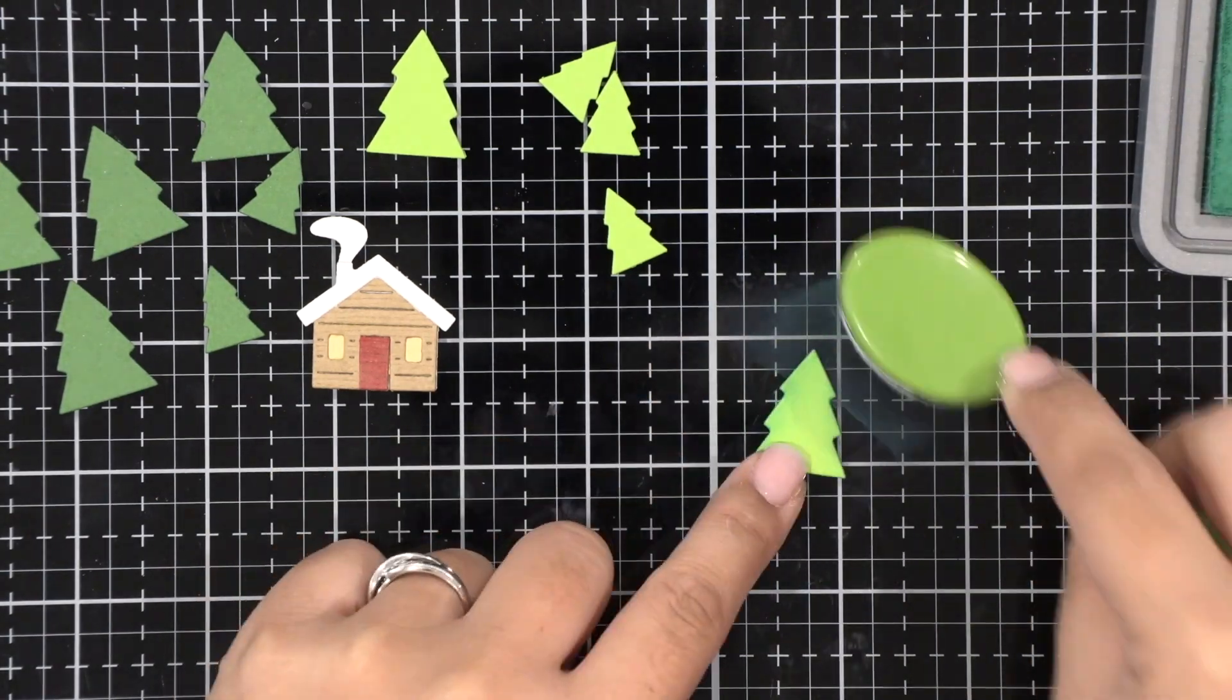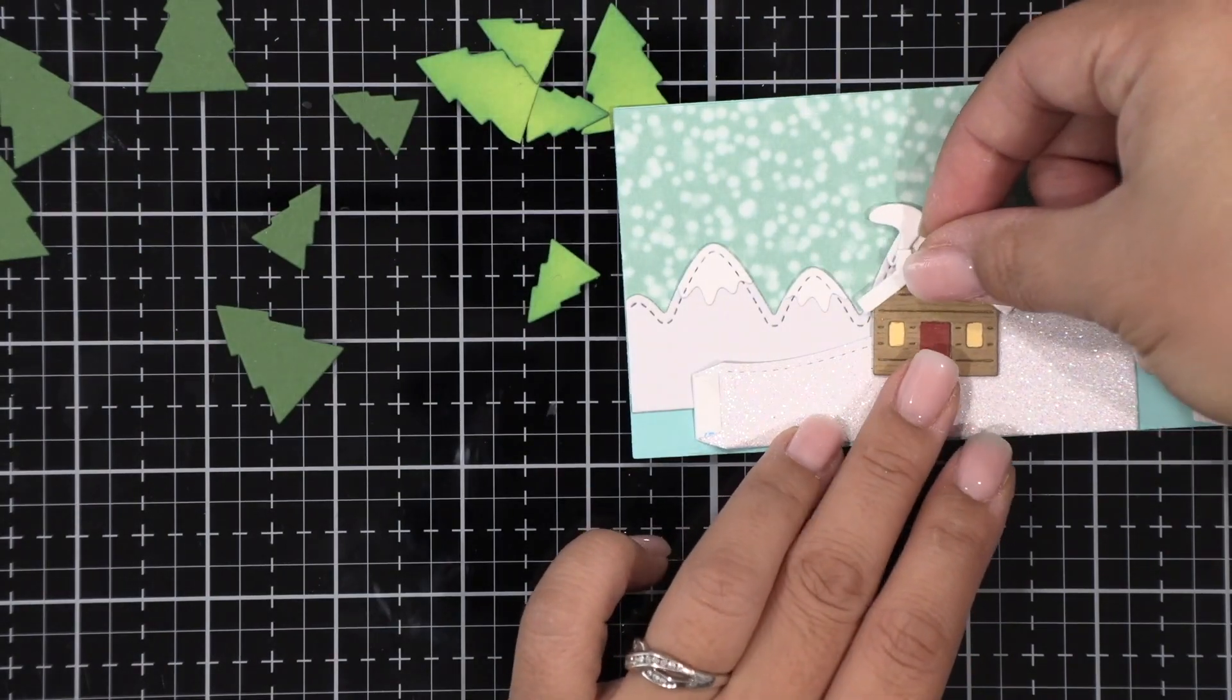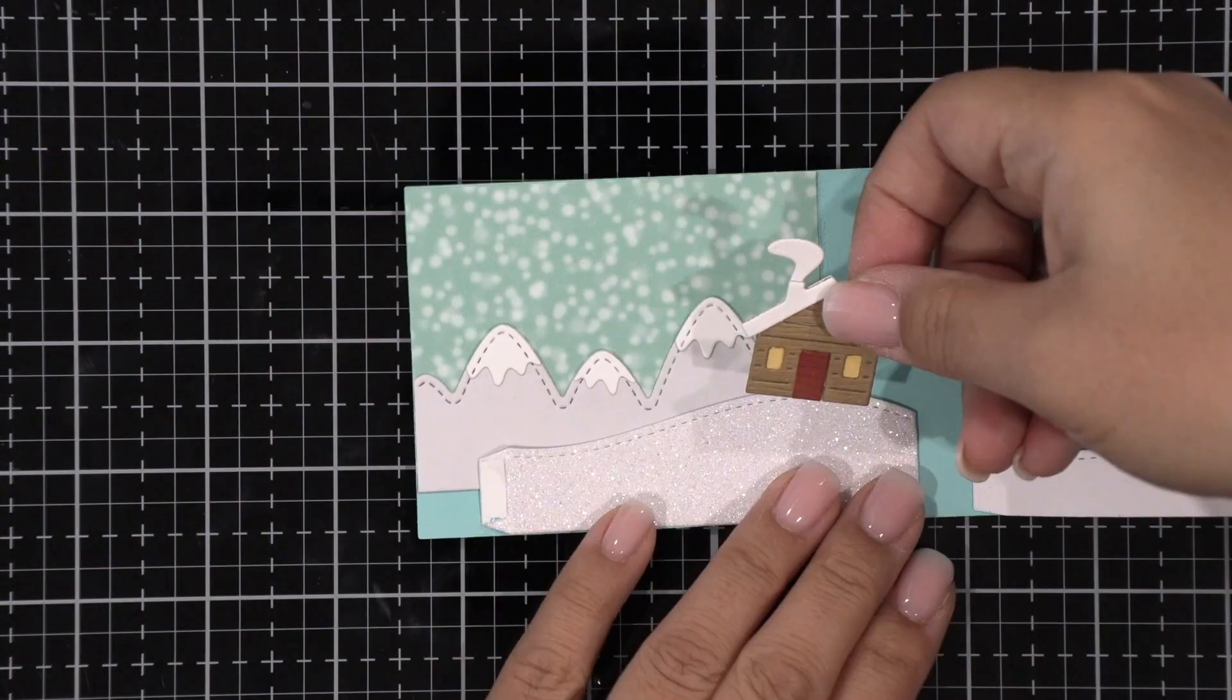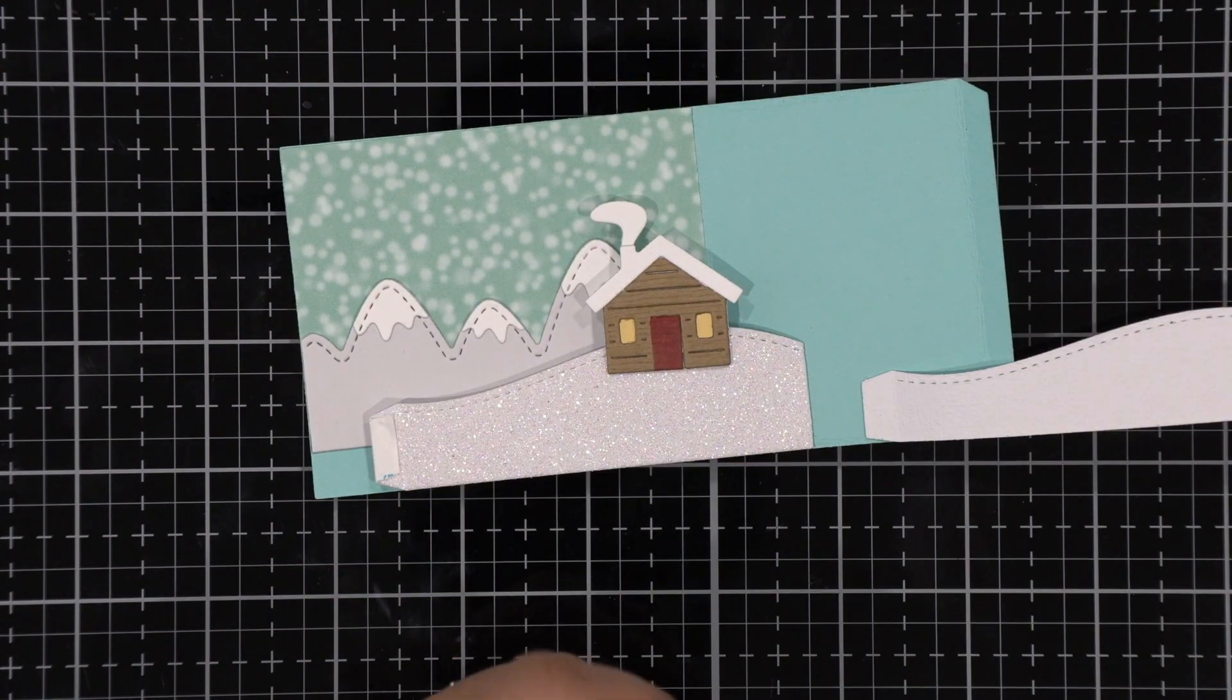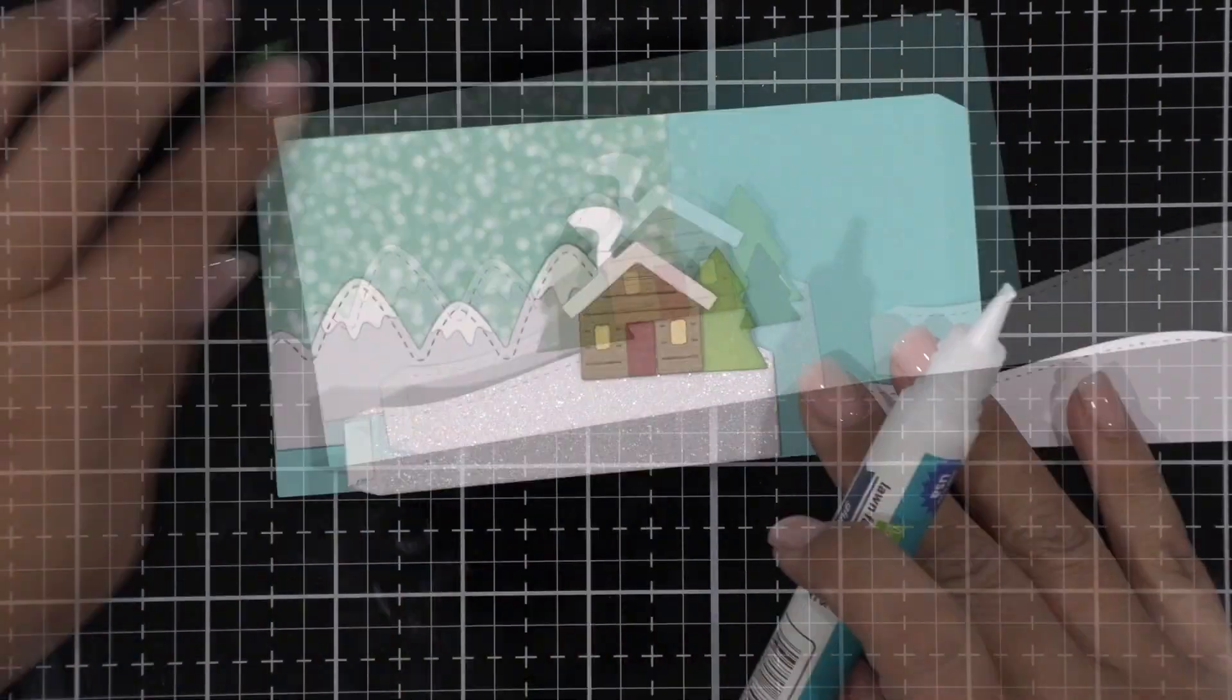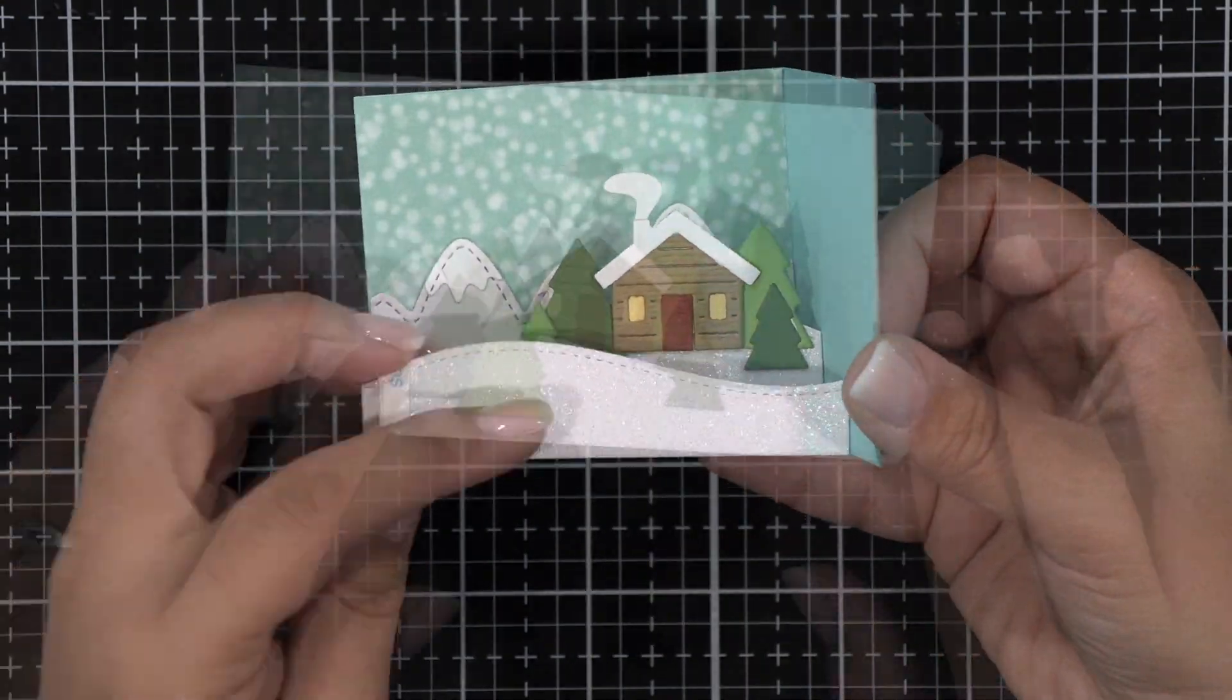On the cilantro cardstock which is the lighter one I wanted to add some more shading on it so I'm just going to ink blend a little bit of pine needles distress oxide ink on them and now we're ready to decorate the inside of our shadow box by adding these die cut elements to our snowy hillsides.